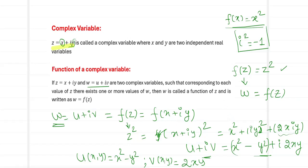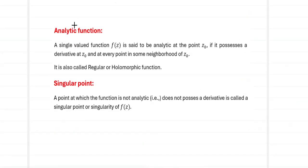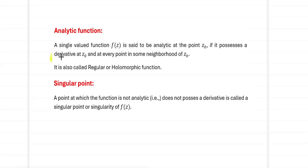Now we move to the concept of analyticity. A single-valued function f(z) is said to be analytic at the point z₀ if it possesses a derivative at z₀ and at every point in some neighborhood of z₀. The key conditions are: the function must be single-valued, it must possess a derivative, and that derivative must exist at z₀ and throughout some neighborhood around it. If this holds, we call the function an analytic function.